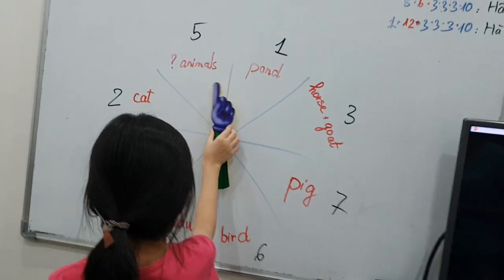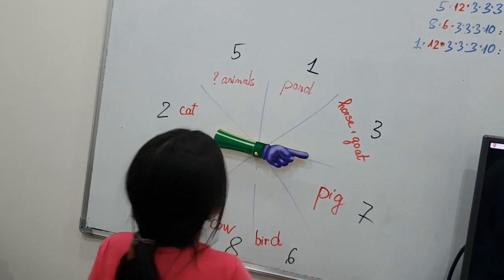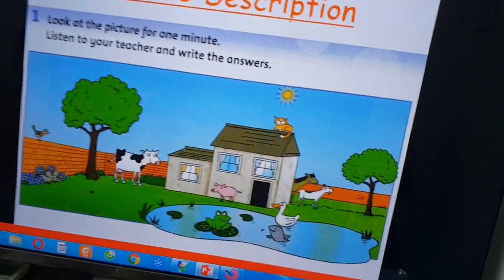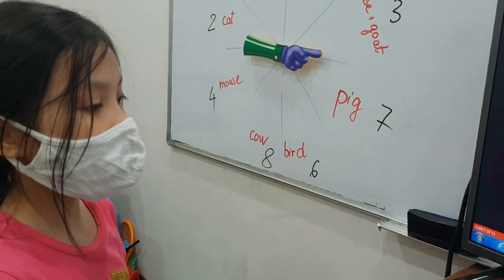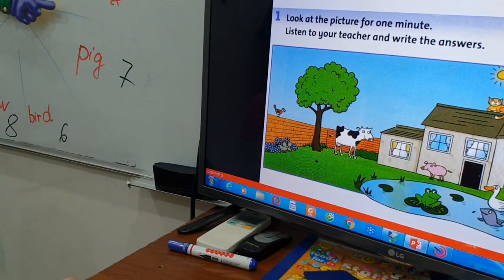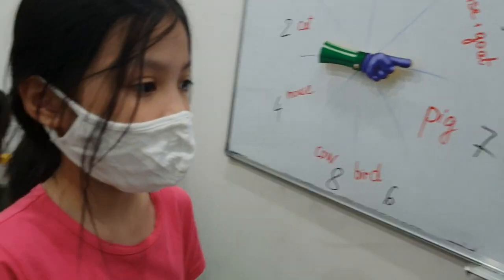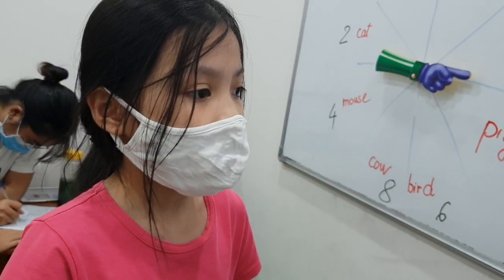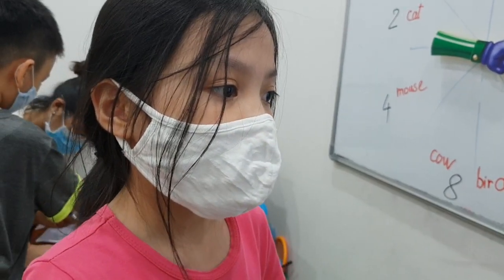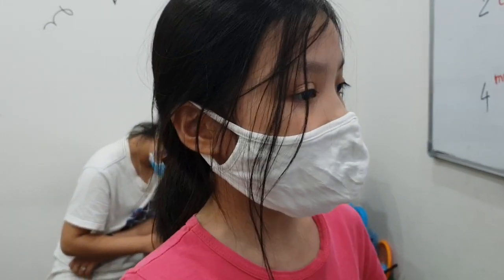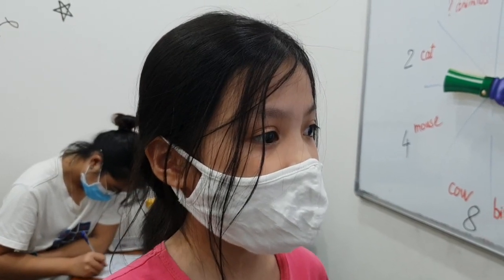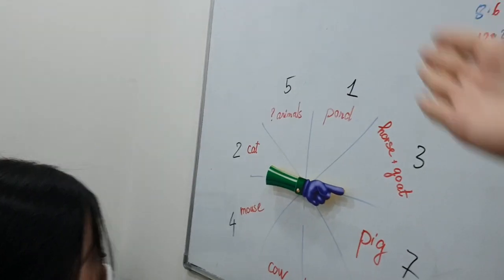Okay, five already. One, two, three. Horse and goat. So where are the horse and goat? You see? Can you point? Behind the house. The horse and the goat are behind the house. Good. So you got five and three, eight points.